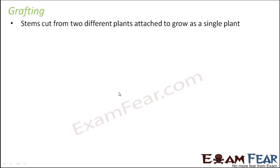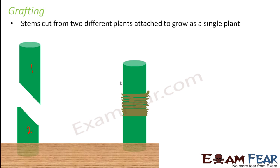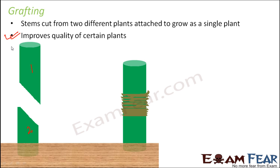In grafting, we take parts from two different plants, put them together, and tie them tightly so they remain attached. We keep watering the plant and giving it appropriate sunlight, and over a period of time it grows as a single plant. The most important advantage is that it improves the quality of certain plants. For example, if a plant gives flowers with good fragrance and appearance but they are very small in size, you can graft it with another plant that gives bigger flowers, combining the two by this technique to overcome the demerit and improve overall quality.